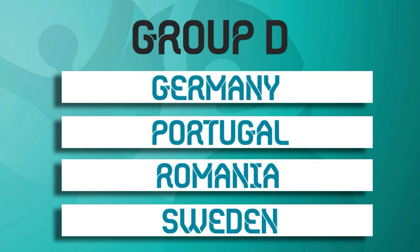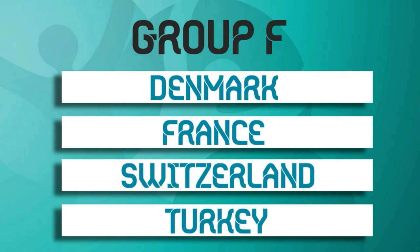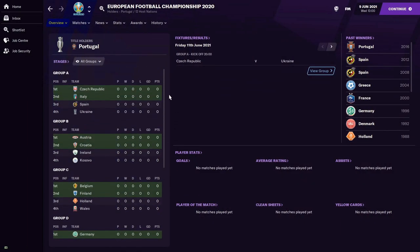Group D has Germany, Portugal, Romania and Sweden — a very tasty group. Group E has England, Norway, Poland and Russia. And finally Group F, which you could probably class as the group of death, with Denmark, France, Switzerland and Turkey — a pretty difficult group, and probably the one to watch. That's all of the groups.